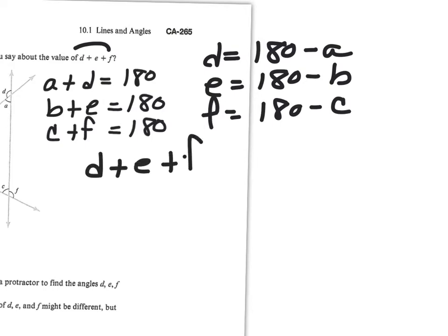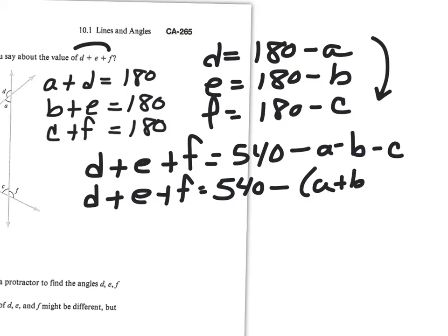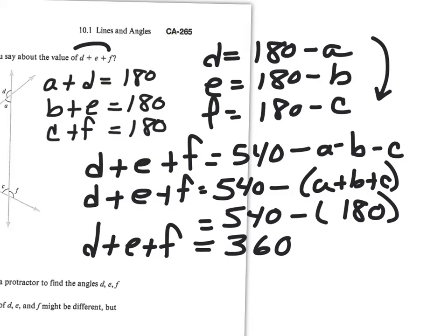When we add d plus e plus f together, we get 180 plus 180 plus 180, which is 540, minus a minus b minus c. Factoring out the minus sign: d plus e plus f equals 540 minus (a plus b plus c). Since a, b, and c are the interior angles of a triangle, they add to 180, so substituting: 540 minus 180 equals 360. We've shown algebraically that d plus e plus f equals 360 degrees — the same result as the bendy guy.